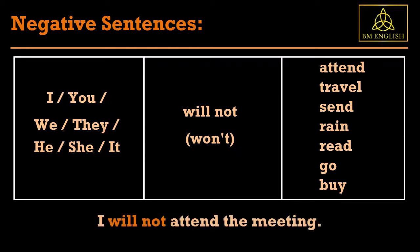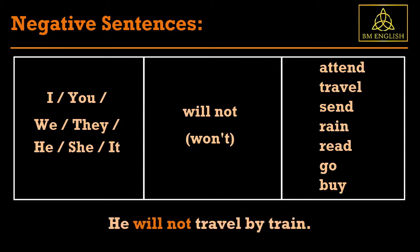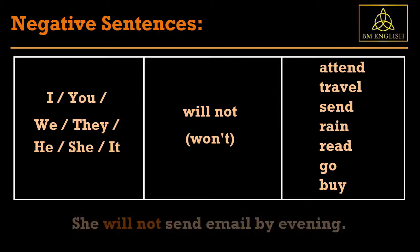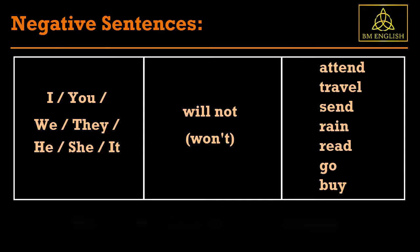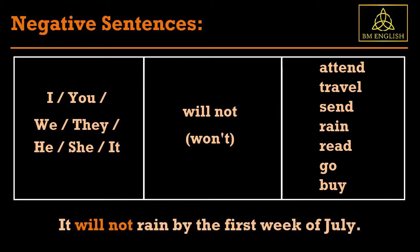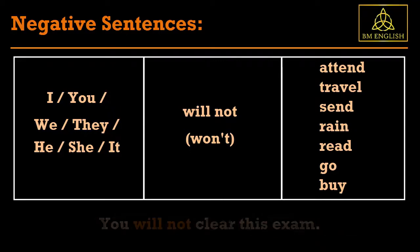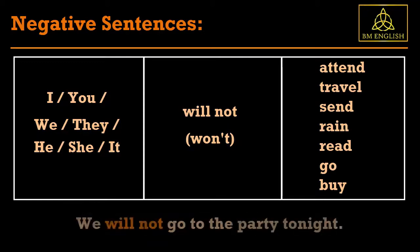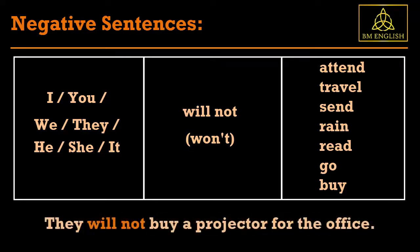For examples: I will not attend the meeting. He will not travel by train. She will not send email by evening. It will not rain by the first week of July. You will not clear this exam. We will not go to the party tonight. They will not buy a projector for the office.